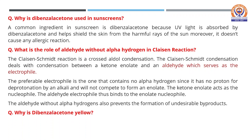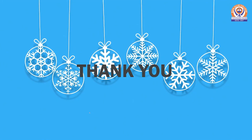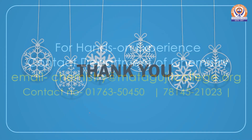Why is dibenzyl acetone yellow in color? Because it is an aromatic compound consisting of an extensive conjugated pi system that absorbs light in the visible region of the electromagnetic spectrum at around 380 nanometers, and hence appears yellow in color. Thank you very much for watching the video.